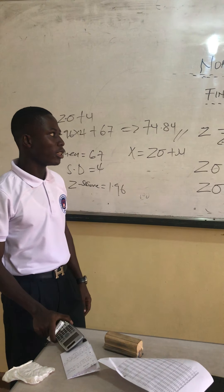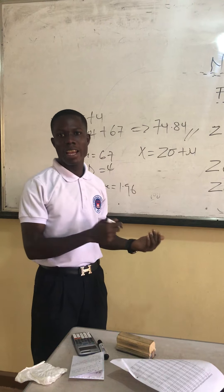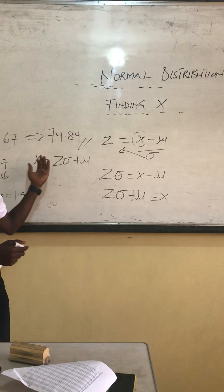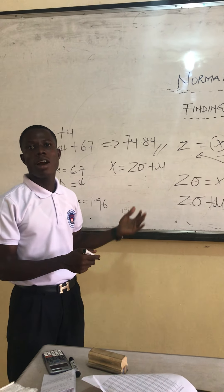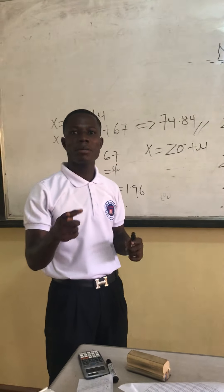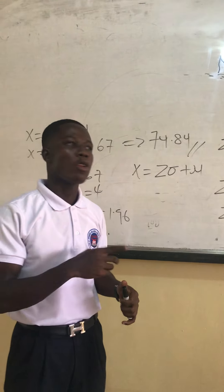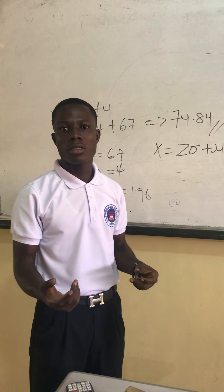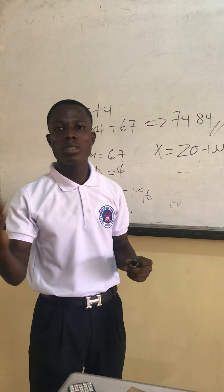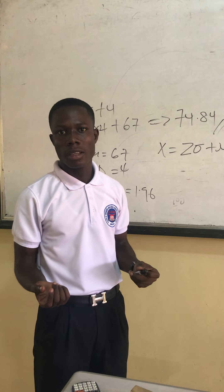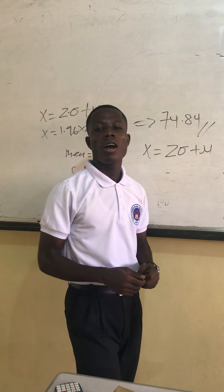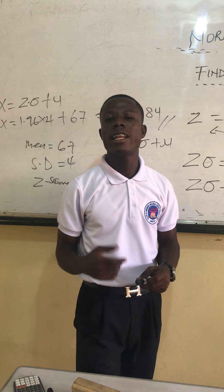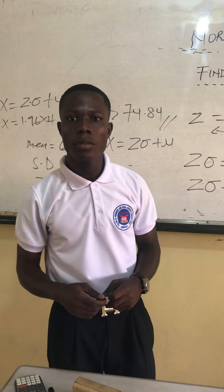So in a given question, you can be asked to find Z or X. We've learned how to find the Z-score, and we've also learned how to find X by making X the subject of the Z-score formula. Whenever asked to find X, substitute the given variables into the formula X equals Z times sigma plus mu to get your final answer. Thank you very much for taking the time to learn this tutorial. Please like, subscribe, and share as well.